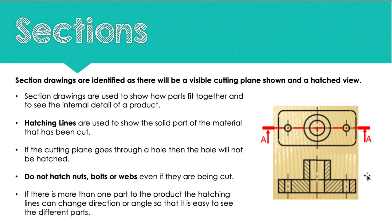We do not hatch nuts, bolts or webs, even if they are being cut. You won't know exactly how that works in drawings, but the more practice we do, the more easier you will find to identify what a nut bolt or a web is. What I would recommend is you just write that down as a note, and then later on we'll be able to discuss it a bit more and identify it a bit easier. If there are more than one part to a product, the hatching lines will change directions so that it's easier to see the different parts. In this drawing here, you can see that all of the hatching lines go the same direction, so we know that they're all the same part. But if, for example, this top part was a different part to the bottom, then the hatching lines would probably go the other direction on that section so that it contrasts between them and we can see the difference between them.